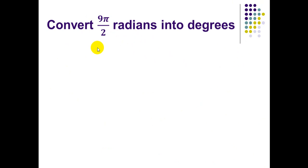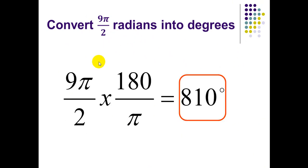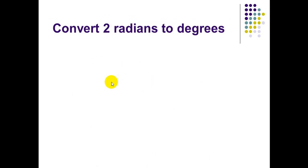Convert 9π/2 radians into degrees: multiply by 180 over π, which gives 810°.